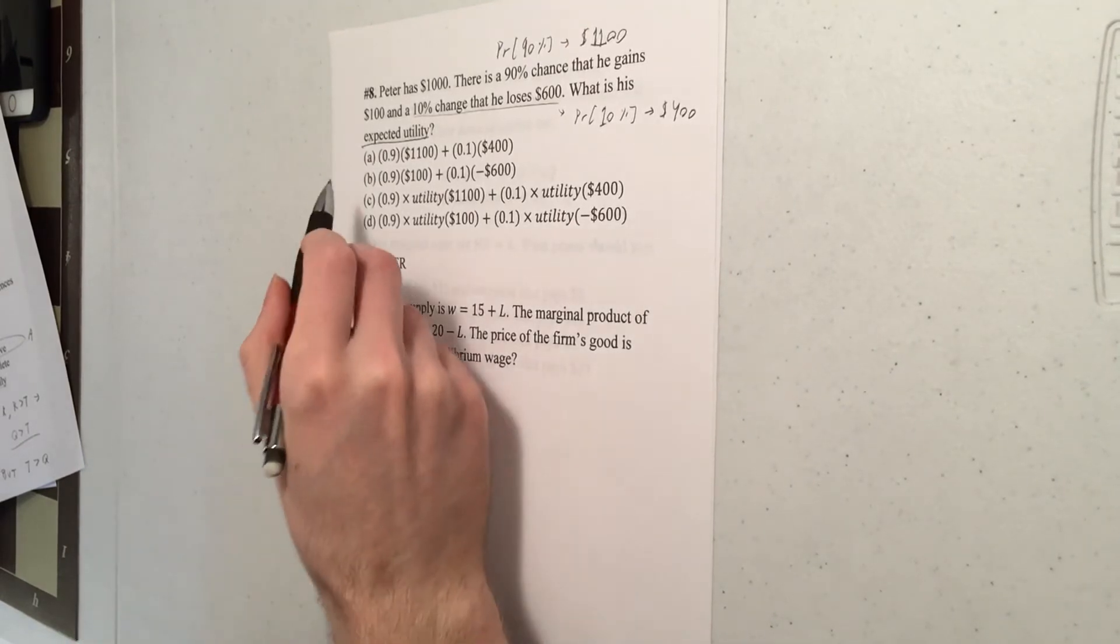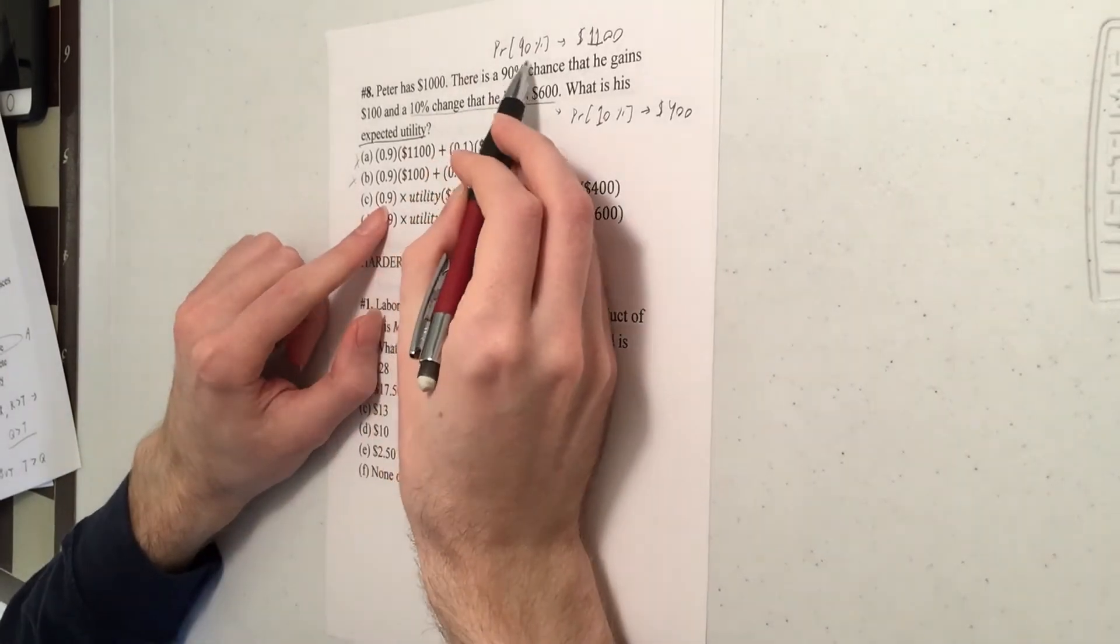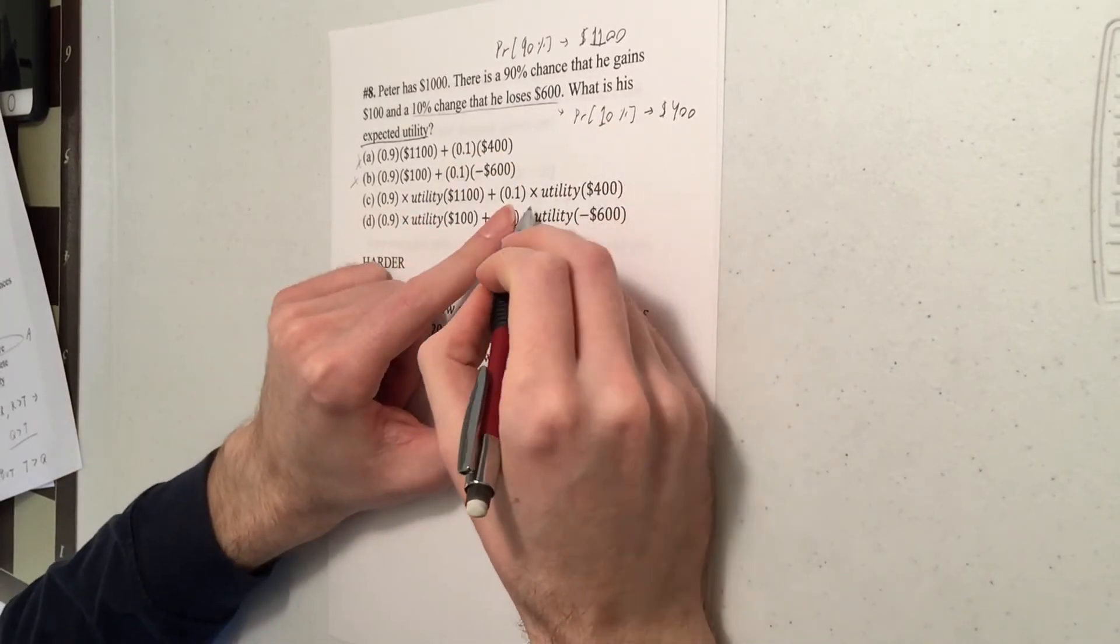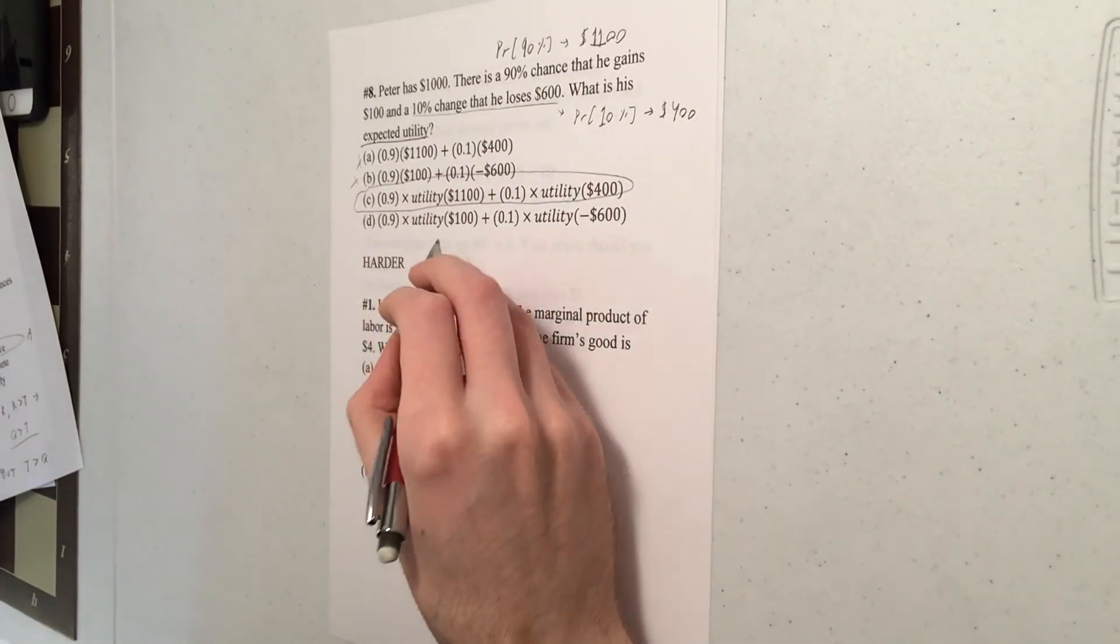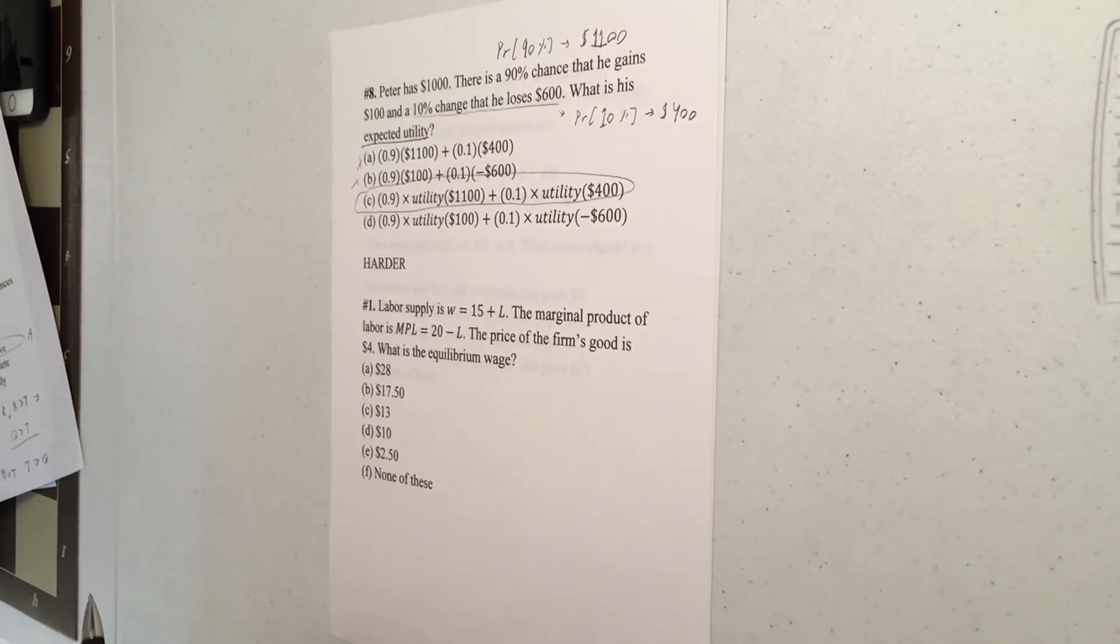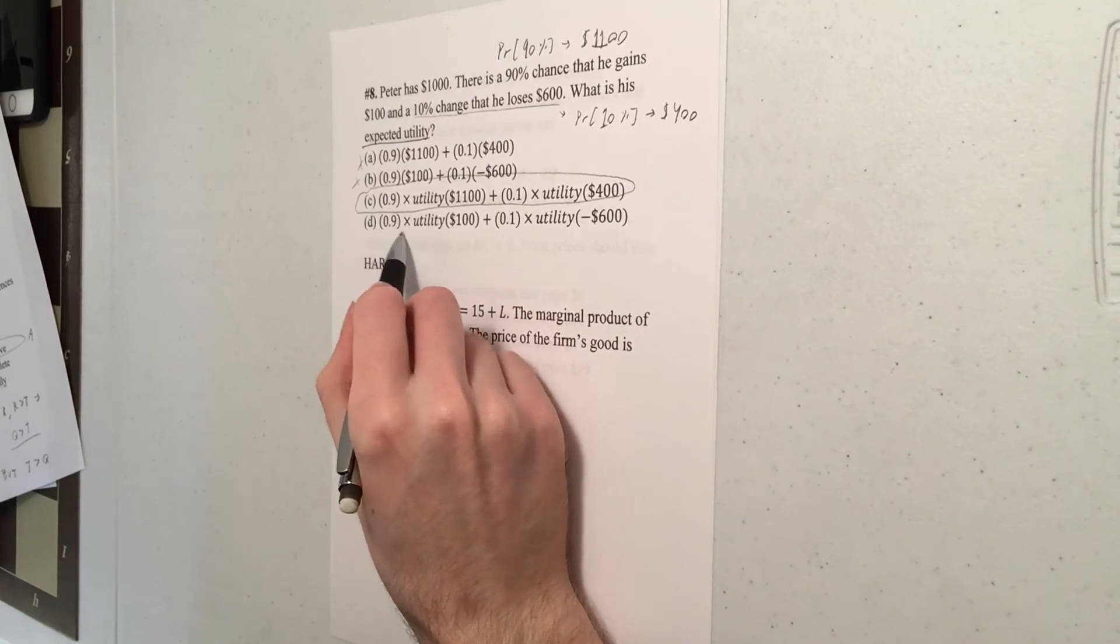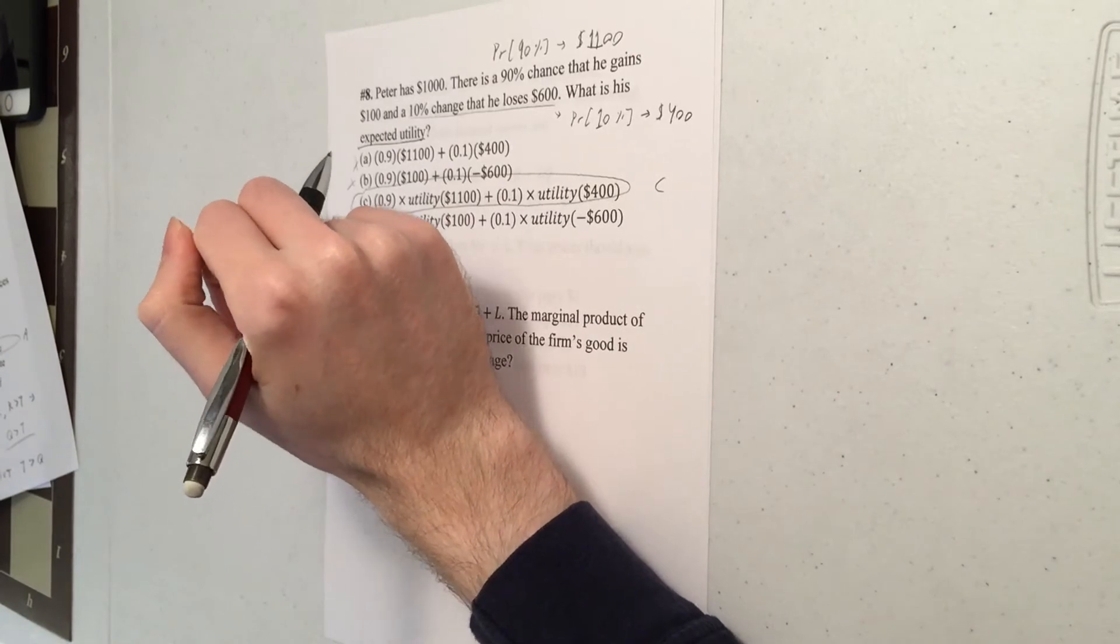Now these first two options here are about expected value. So you can rule out A and B right away. Now, expected utility looks at the total amount of money he has, not whether it's a gain or loss. So that'd be choice C. So probability 90%, he has 1100. He has some amount of utility from that. And probability 10%, he has 400. So C is right. Now, choice D here is looking at the gain or the loss, ignoring the initial thousand dollars. That'd be more similar to prospect theory, though not quite exactly prospect theory. With prospect theory, you would overweight unlikely events. So you'd inflate that 10% above 10%. And it also would underweight things that are likely. So that 90% would be something less than 90% under prospect theory. So for expected utility, the answer here is C. So that wraps up the easy section. Let's look at the harder ones.